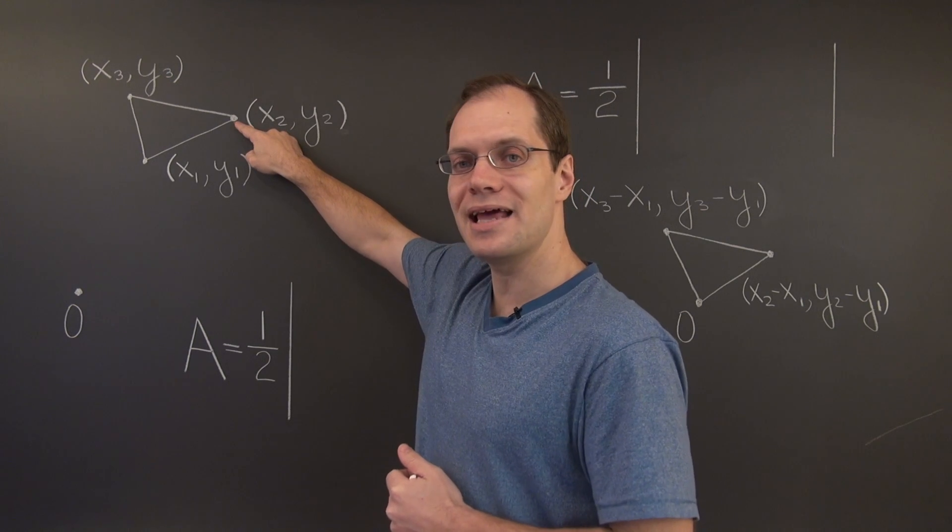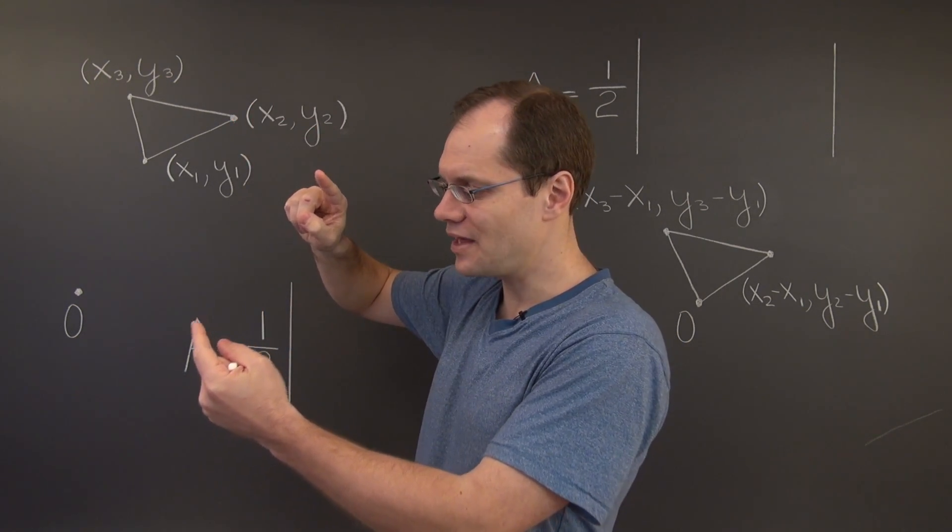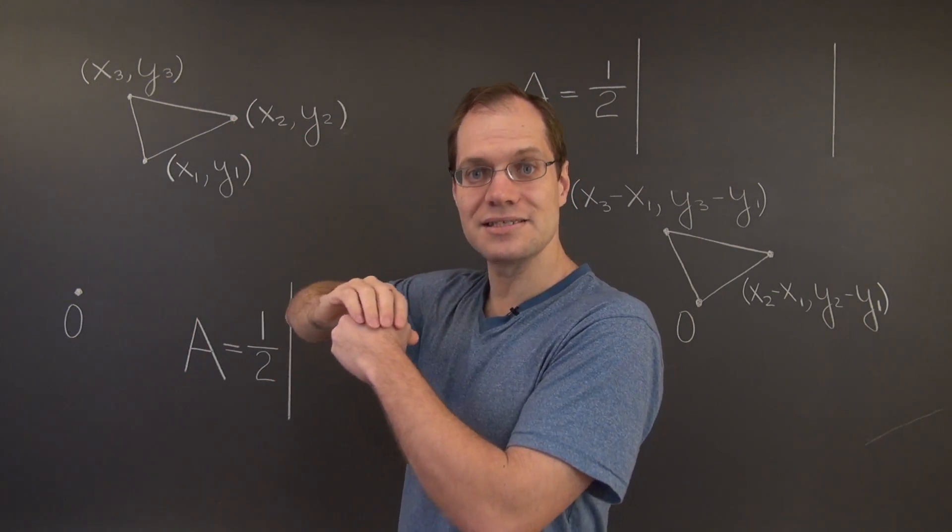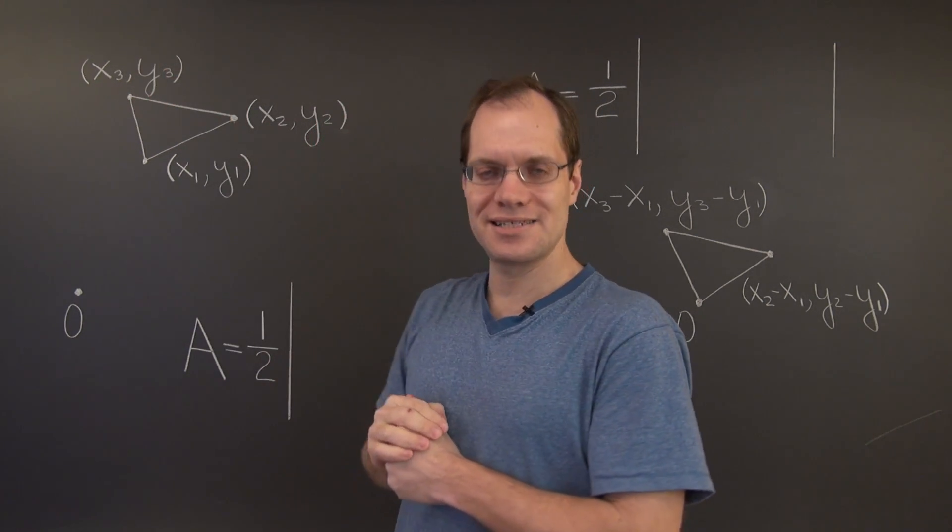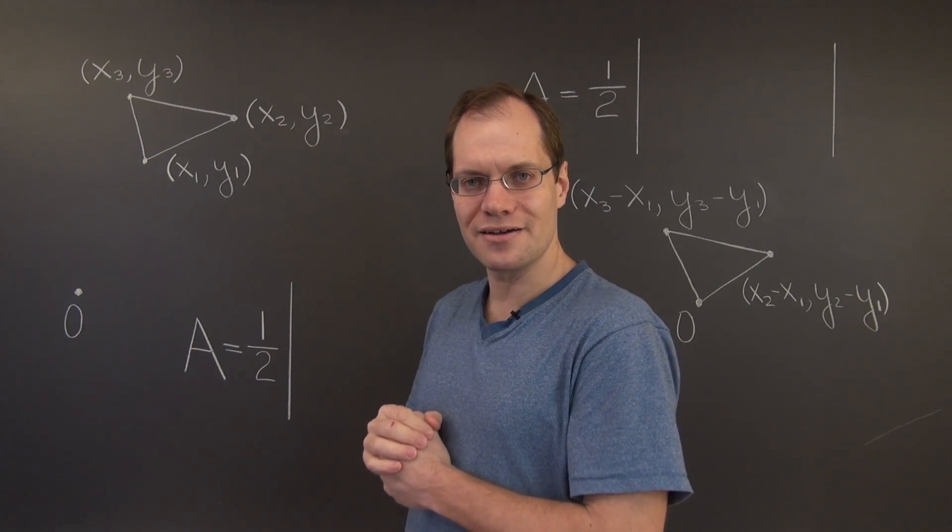This one will end up at a2 minus a1, and that vector, a2 minus a1, now represents the side of the triangle. And this would end up at a3 minus a1, and that would be the other side of the triangle.